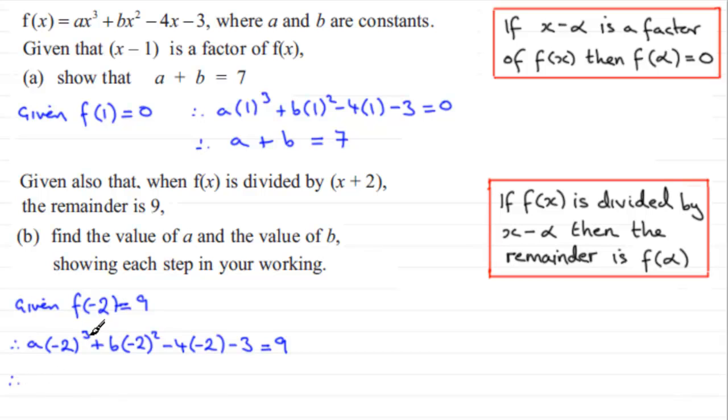Working this out, we have minus 2 cubed which is minus 8, multiplied by a gives us minus 8a. Minus 2 squared is 4 multiplied by b, so 4b. Here we've got plus 8 and then minus 3 equals 9. 8 minus 3 is 5. If we subtract 5 from both sides, we have 9 minus 5 which is 4. So we have minus 8a plus 4b equals 4.